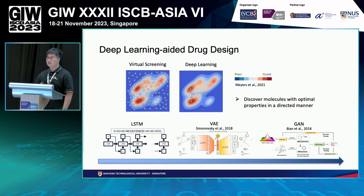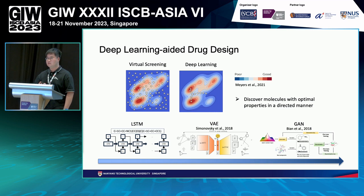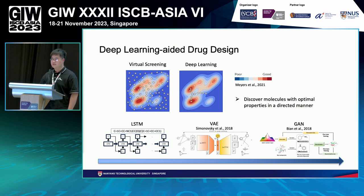Deep learning has achieved huge success in the area of drug discovery. Compared with traditional computer-aided drug discovery methods such as virtual screening, which needs to enumerate a lot of possibilities in a large chemistry library, deep learning can help us model the relationship between chemical structures and biological properties so that we can design molecules with optimal properties in a directed manner. Depending on how we represent the molecule data, there are multiple generative models we can use, such as if we represent the data in SMILES strings, we can use a long short-term memory neural network to generate the symbols one by one.